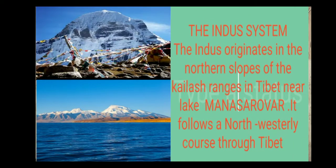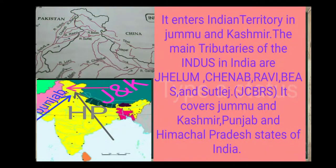The Himalayan Rivers — the Indus system: the Indus originates in the northern slopes of the Kailasa Range in Tibet, near Lake Manasarovar. It flows in a north-westerly course through Tibet and enters Indian territory in Jammu and Kashmir. The main tributaries of the Indus in India are Jhelum, Chenab, Ravi, Beas, and Sutlej — remembered as JCRBS.